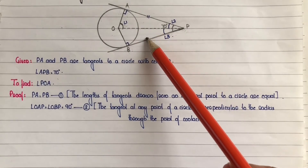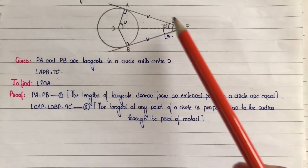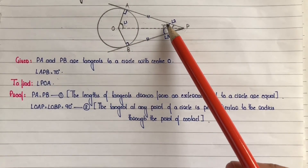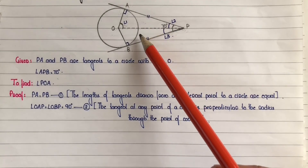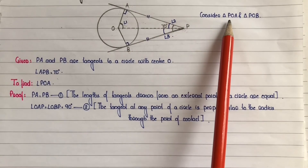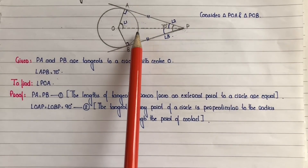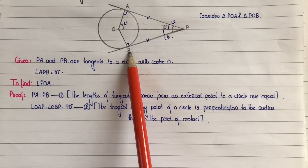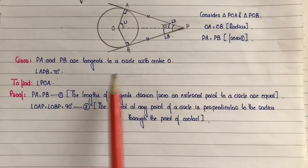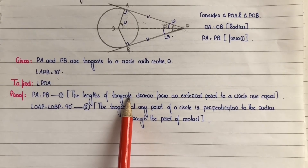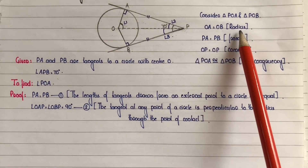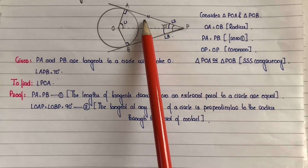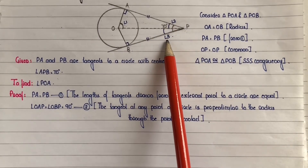We consider the two triangles POA and POB and prove them congruent. OA equals OB as they are radii of the circle. PA equals PB from equation 1, as per theorem. OP is the common side. By SSS congruency, triangle POA is congruent to triangle POB. Therefore, by CPCT, angle 2 is equal to angle 3.